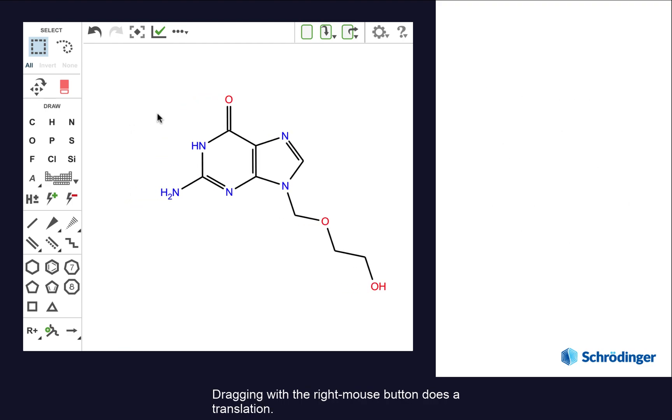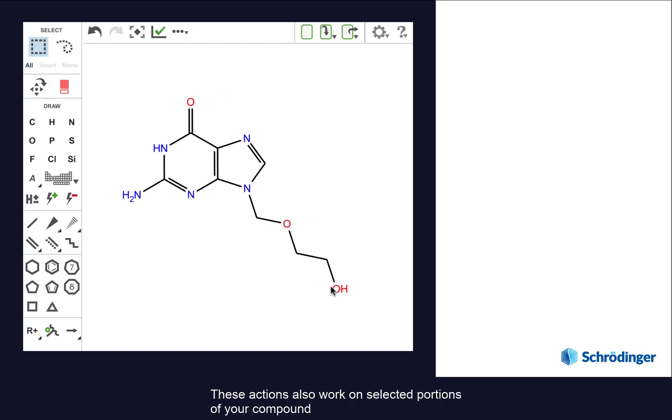Dragging with the right mouse button does the translation. These actions also work on selected portions of your compound.